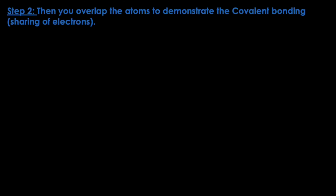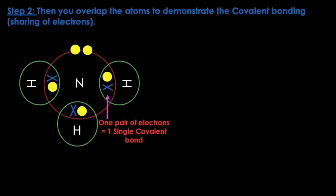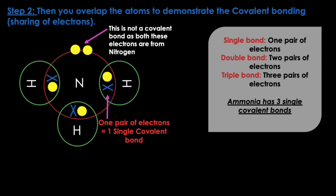Step two: overlap the atoms to demonstrate the covalent bonding, which is a sharing of electrons. So here's nitrogen overlapping with the three hydrogen atoms. Where the overlap takes place, nitrogen is sharing one electron and hydrogen is sharing one electron, making one pair of electrons — one single covalent bond. Every place where hydrogen and nitrogen overlap is where a pair of electrons is shared. So ammonia has three single covalent bonds. A double covalent bond is when two pairs of electrons are shared, and a triple covalent bond is when three pairs of electrons are shared.